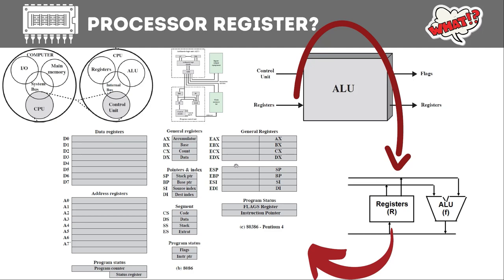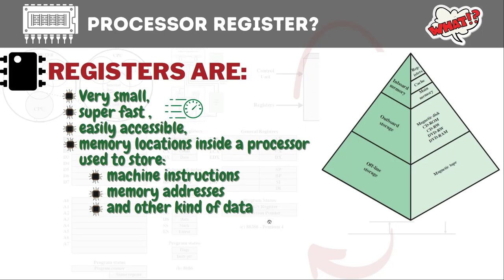There are different kinds of registers in different processors. For example, the M6800 machine has data registers, address registers, program status, program counter, and status register. The x86 architecture has registers AX, BX, CX, DX, stack pointer, base pointer, source index, destination index, code segment, data segment, stack segment, extra segment, and flags. Similarly, x386 and Pentium 4 have their own register sets. So we can now define what registers are.